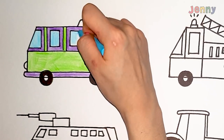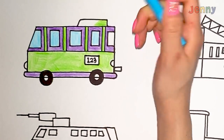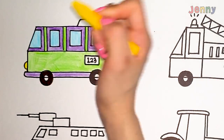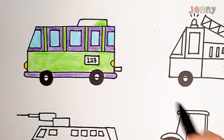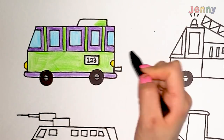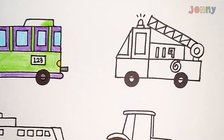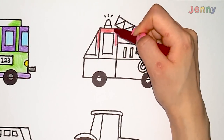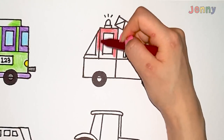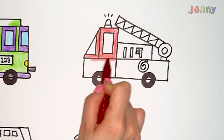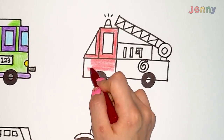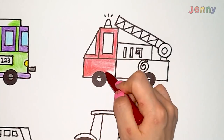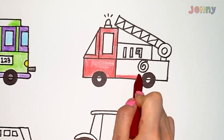This is white, the color white. White, white, white. This is white, the color white, white, white, white. Do you know what color this is? This is white. This is gray, the color gray, gray, gray, gray. This is gray, the color gray, gray, gray, gray. Do you know what color this is? This is gray.